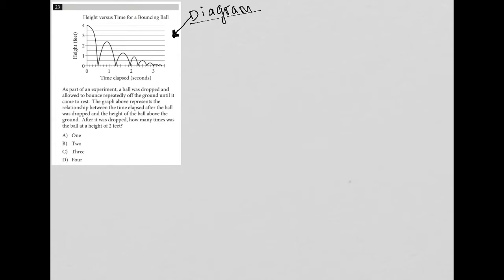Let's take a look at this diagram before we read what the question actually asks for. The title here says height versus time for a bouncing ball, where the y-axis is the height in feet and the x-axis is the time in seconds. Let me see if I can understand the curves here.